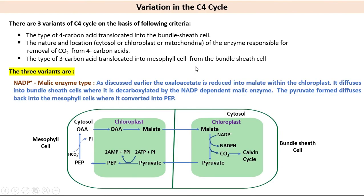There are three variants of the C4 cycle based on the following criteria: the type of 4-carbon acid translocated into the bundle sheath cell; the nature and location of the enzyme responsible for removal of CO2 from 4-carbon acids; and the type of 3-carbon acid translocated into the mesophyll cell from the bundle sheath cell.